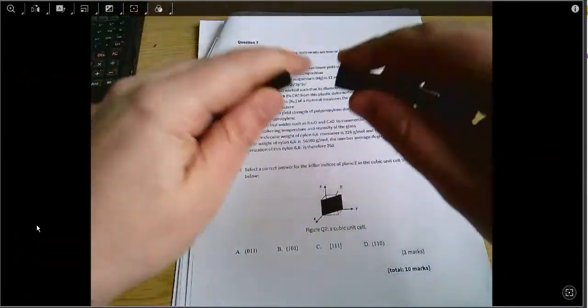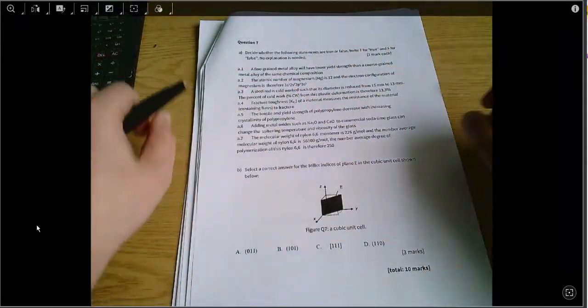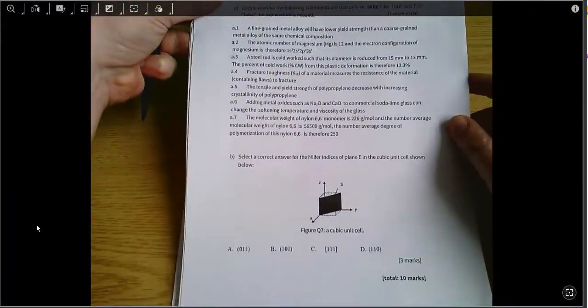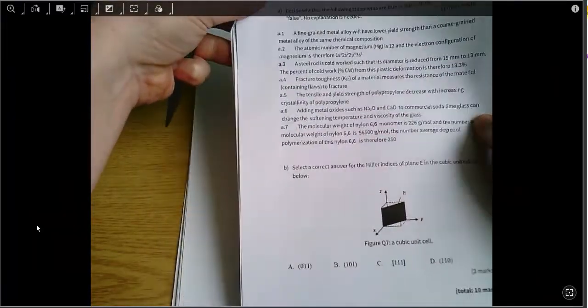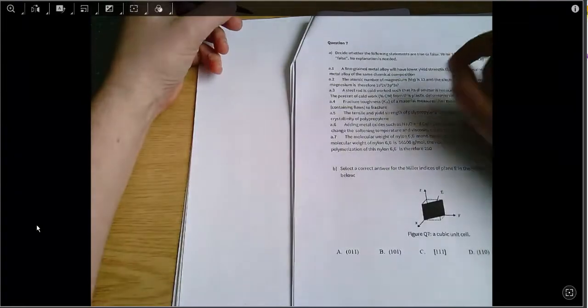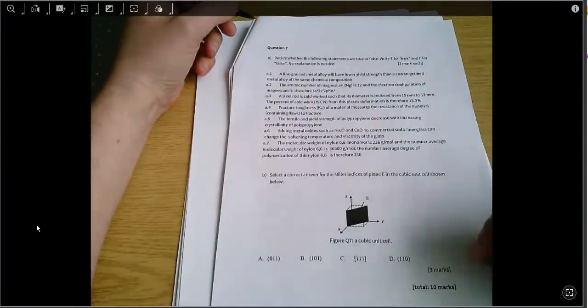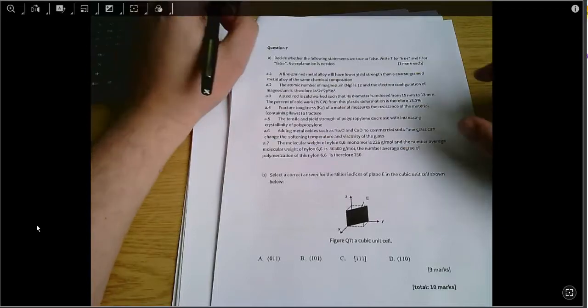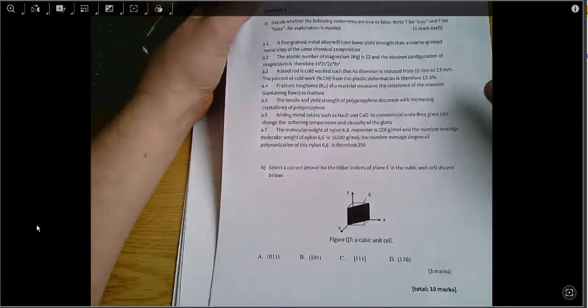This is Introduction to Mechanical Engineering and this is the 2017-18 exam question seven. It's a set of seven true-false questions and then we've got to calculate the Miller indices for a specific plane at the end.